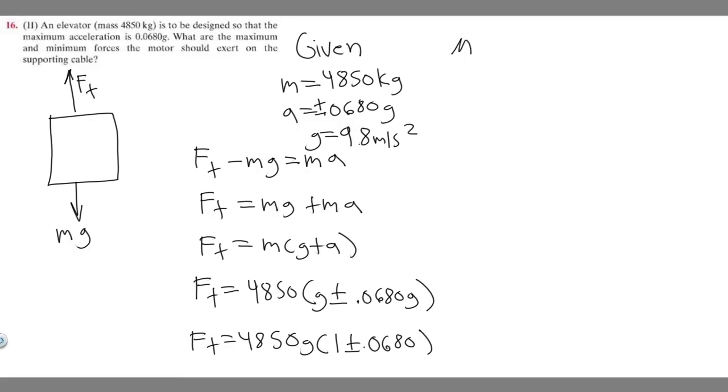Let's start with the max. Max F_T is going to be 4850 times 9.8, and since it's max we're adding, so 1 plus 0.0680.